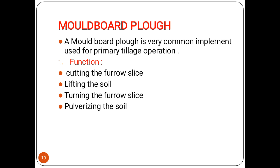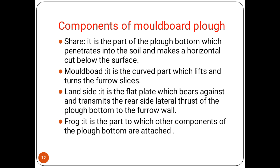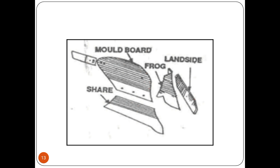The moldboard plow is a very common implement used for primary tillage operations. It cuts the furrow slice, lifts the soil, turns the furrow slice, and pulverizes the soil. You can see the different parts of the animal-drawn moldboard plow. The components include: the share, which is the part of the plow bottom that penetrates the soil and makes a horizontal cut; the moldboard, which is the curved part that lifts and turns the furrow slice; the land side, which is the flat plate bearing against the furrow wall; and the frog, which is the part to which other components of the plow bottom are attached.